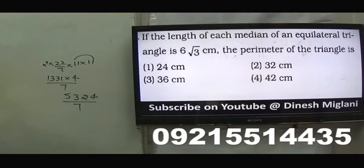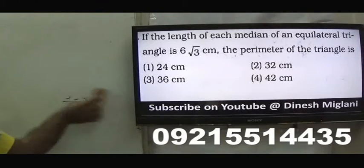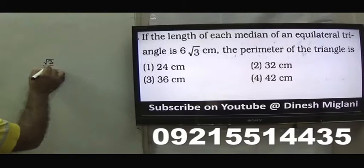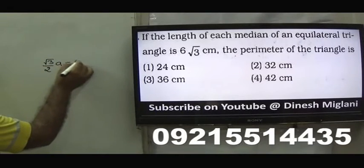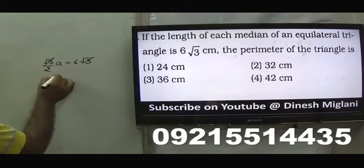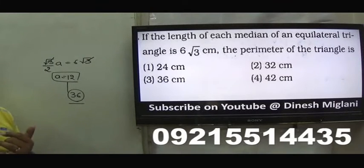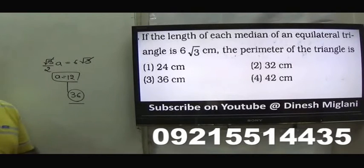Seventeenth question: each median of an equilateral triangle is 6√3. Find the perimeter. In an equilateral triangle, the median equals the altitude. Using altitude formula (√3/2)a = 6√3, we get a=12. Perimeter = 3×12 = 36. In an equilateral triangle, medians, angle bisectors, perpendicular bisectors, and altitudes are all the same.